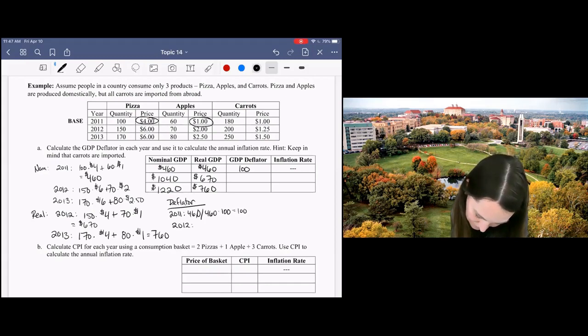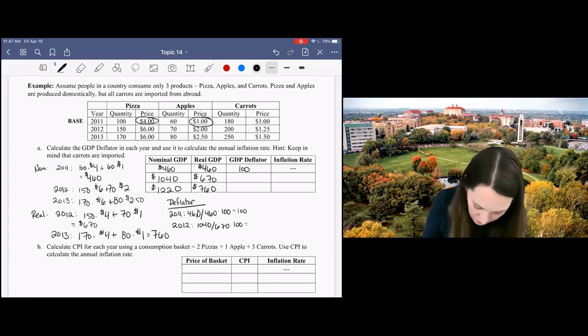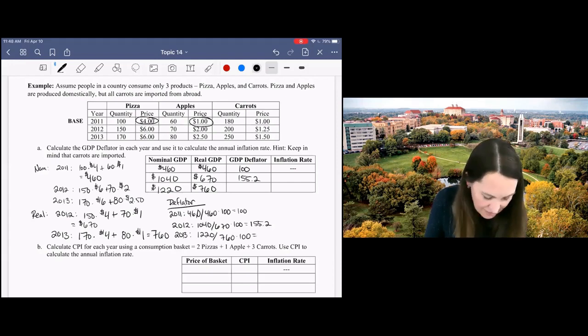So nominal over real times 100, that's 155.2. And nominal over real times 100, that's 160.2.